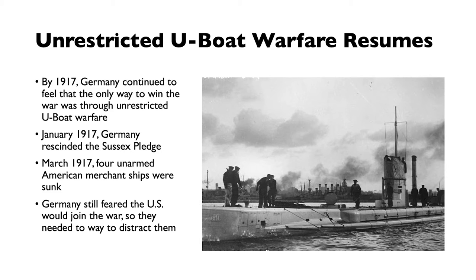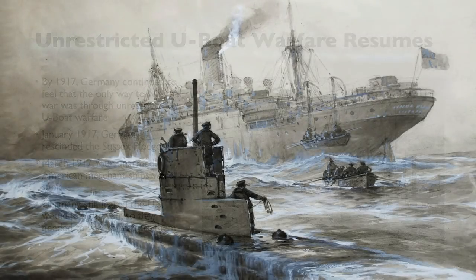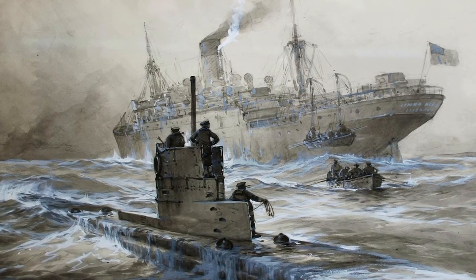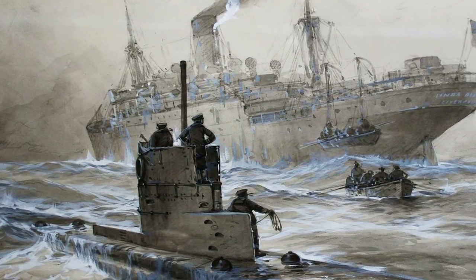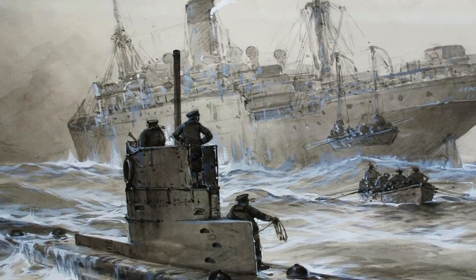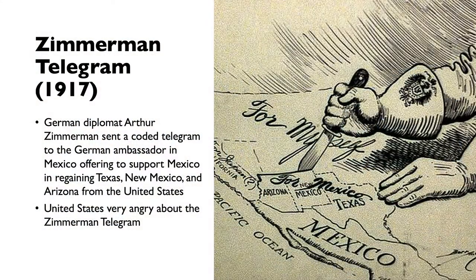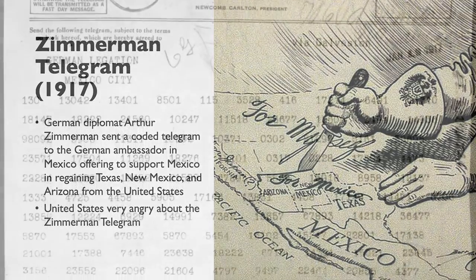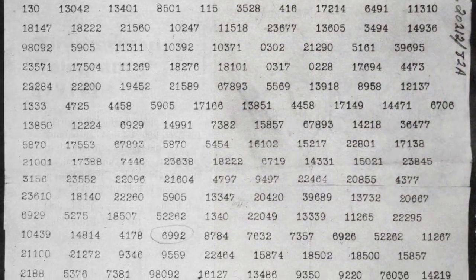But there was continued unrestricted U-boat warfare by the Germans. By 1917, Germany continued to feel the only way they could win the war was through unrestricted U-boat warfare. In January 1917, Germany rescinded the Sussex Pledge. In March of 1917, four unarmed American merchant ships were sunk. Germany still feared the U.S. would join the war, so they needed a way to distract the U.S. — and they decided to encourage Mexico to attempt to reclaim land from the U.S. This was called the Zimmermann Telegram.